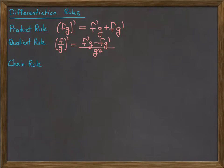Chain rule: if you have some composite function, take the derivative of the outer function, leaving the inner function alone, then multiply by the inner derivative.